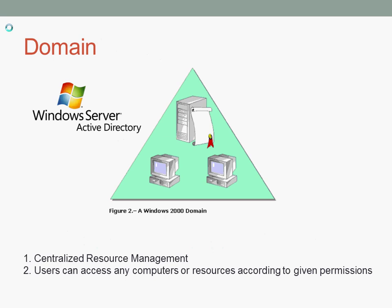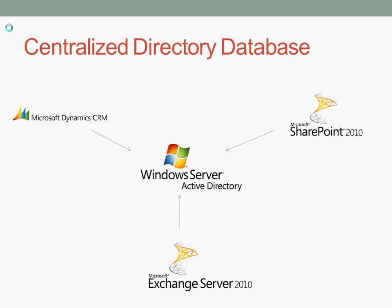Active Directory can be considered as the backbone of a Windows network. Many application servers from Microsoft work only with Active Directory — for example, Exchange Server. So it is a very important part of any network where centralized administration, management, and security are needed.